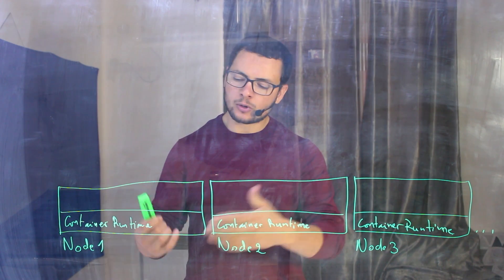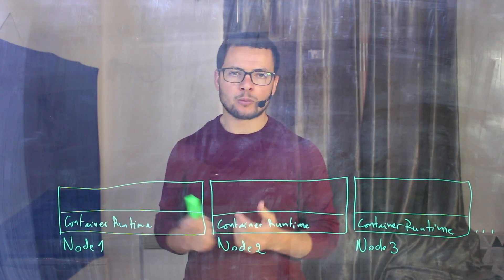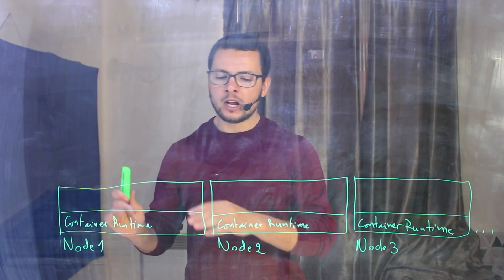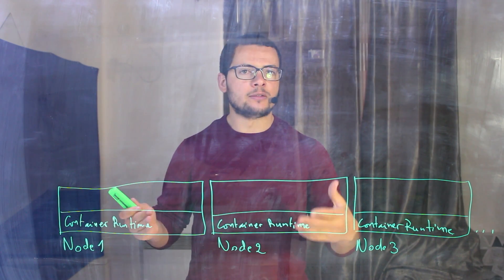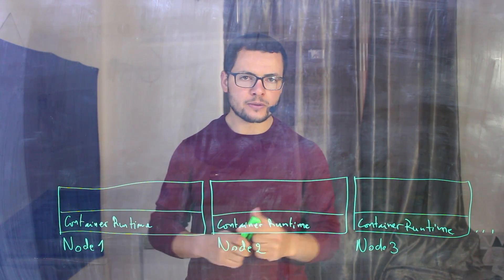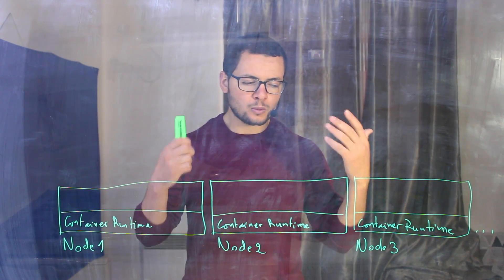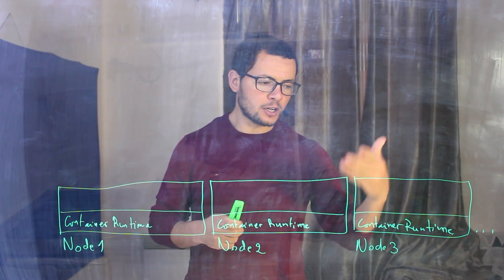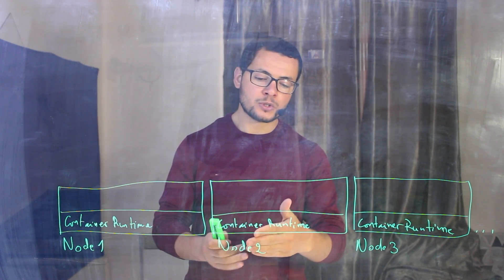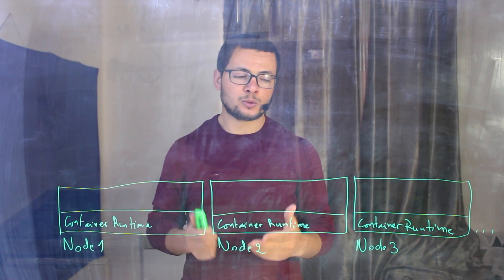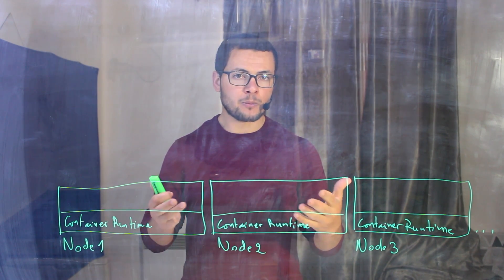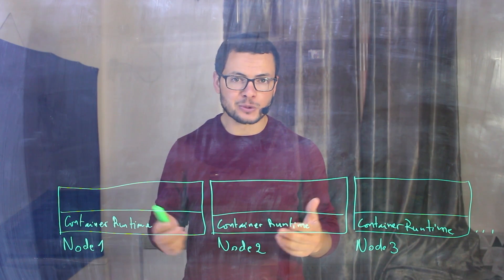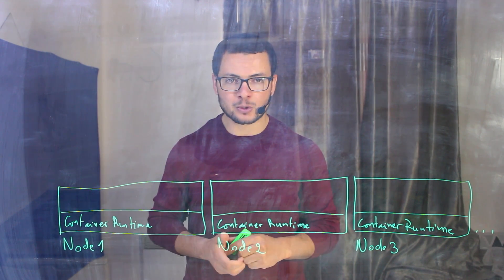But we can do that manually. So we connect to each node, then we run the commands Docker run the container. And with this, we can have different containers deployed on those different nodes. But what should I do when one of those containers crashes or one of those nodes crashes? So I don't want to fix this manually, because that's not fun to do. And here where Kubernetes comes into play.